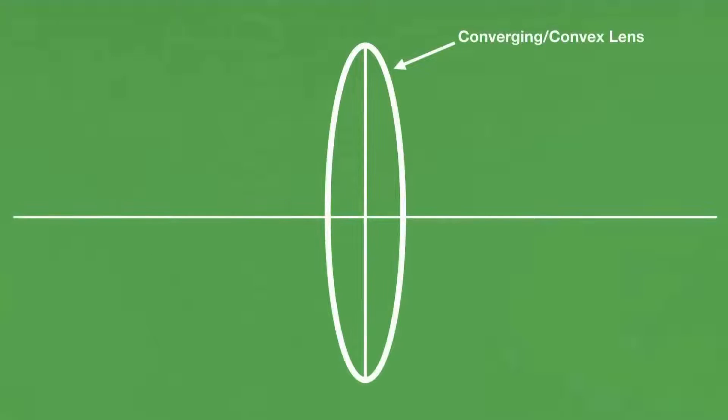Converging, or convex lenses, are a kind of lens that bends light to a specific point. To see how they bend light, let's go to a diagram.